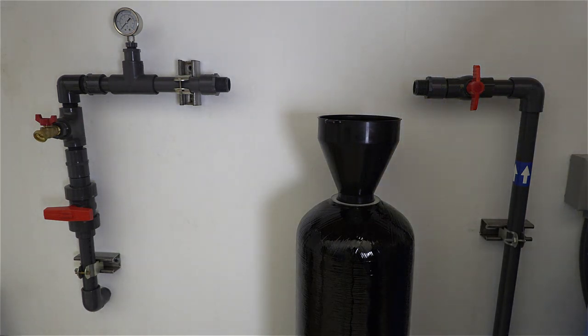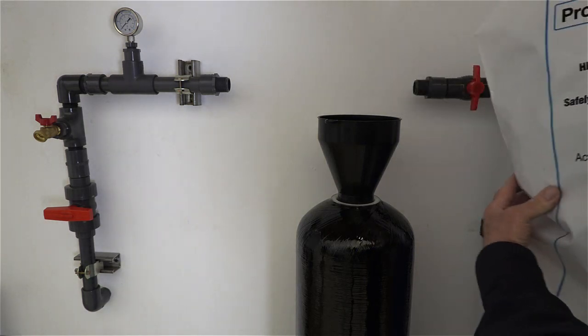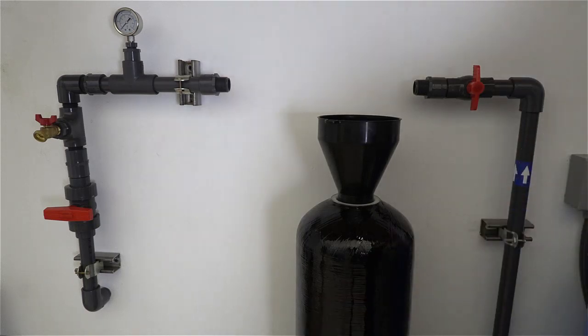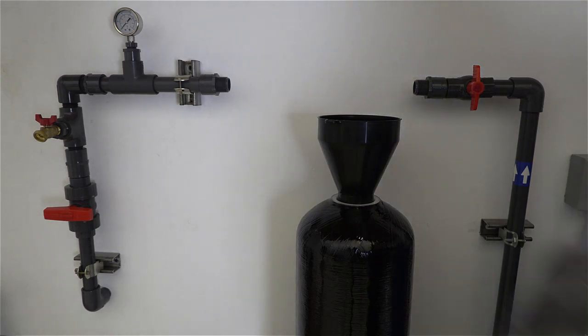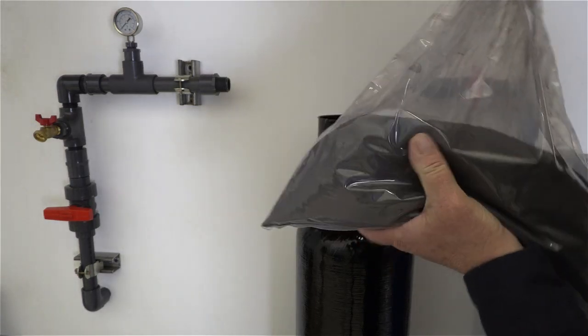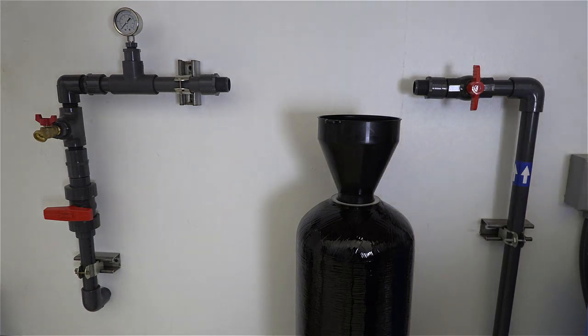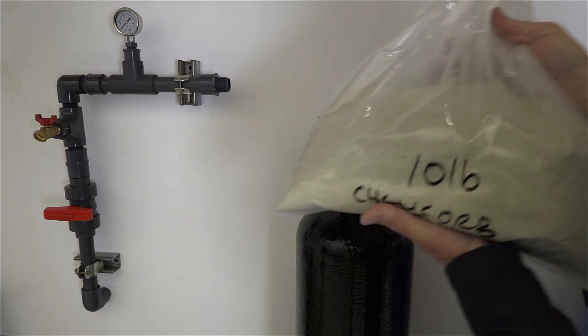After installing the gravel, you'll install the Pro-Aux manganese—this is your main media. Depending on how many bags you have, continue adding it. Once that's installed, top it off with your ChemSorb.